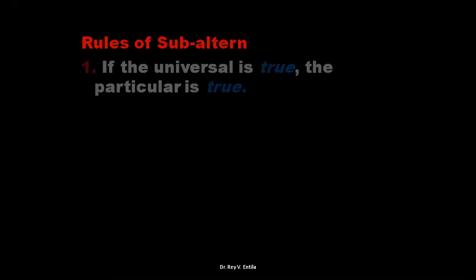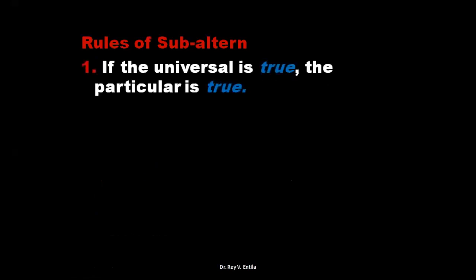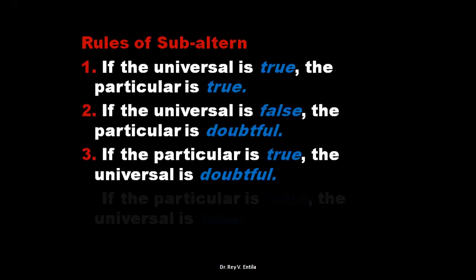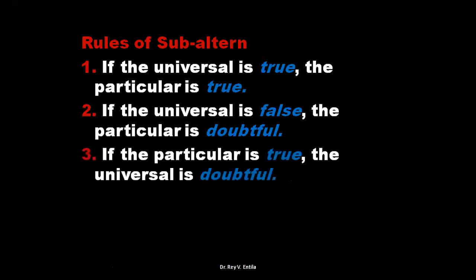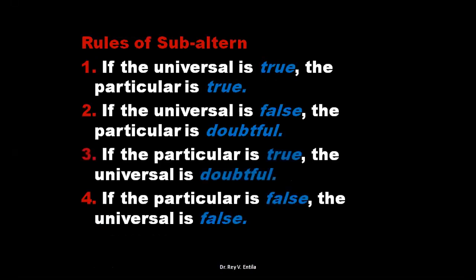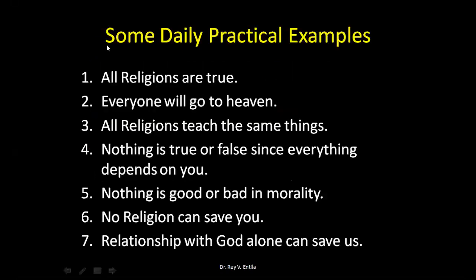Rules of subaltern: if the universal is true, the particular is true. If the universal is false, the particular is doubtful. If the particular is true, the universal is doubtful. If the particular is false, the universal is false.